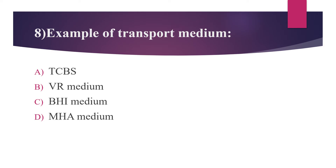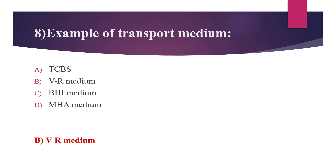Eighth question: an example of a transport medium. Option A: DCBS. Option B: VR medium. Option C: BHI medium. Option D: MHI medium. The answer is option B, VR medium — Venkatraman-Ramakrishnan medium — which is used for transporting Vibrio cholerae. It is also a holding medium, and DCBS is a plating medium used for Vibrio.